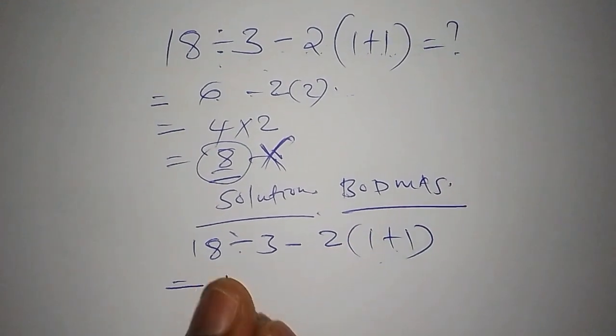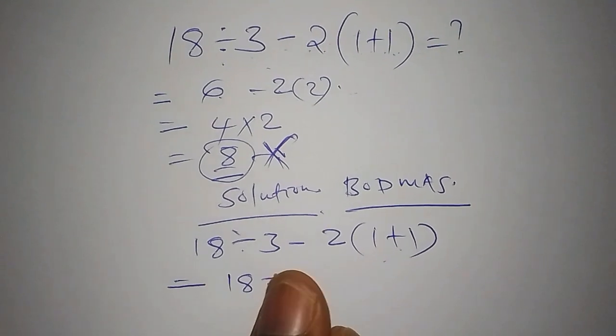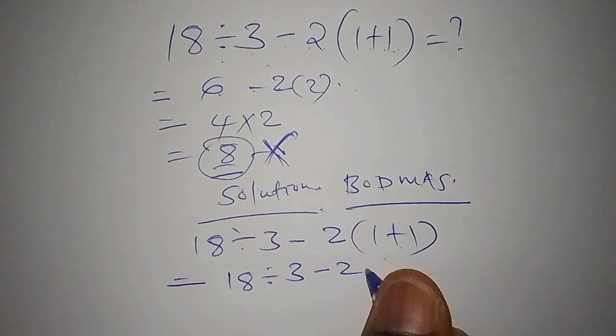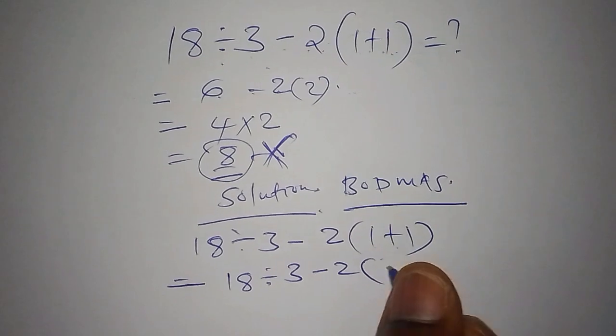So we shall have 18 divided by 3, subtract from 2 into bracket 1 plus 1 is 2. Then we close the bracket.